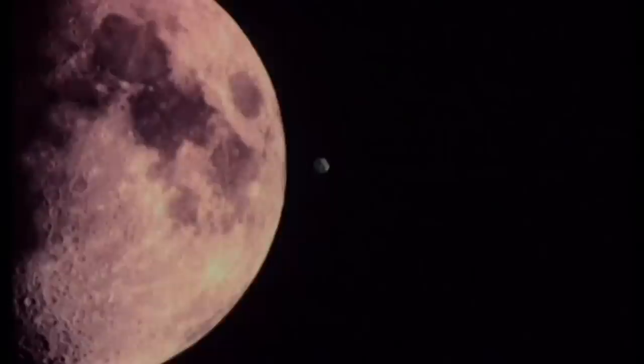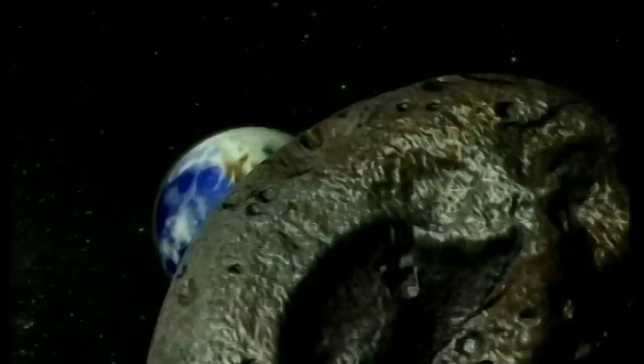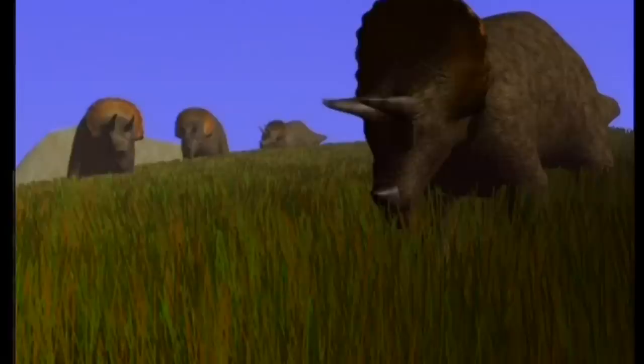C'était d'il y a 65 millions d'années. Dix kilomètres de roche et de métal entrent en collision avec la Terre. Pour les dinosaures, c'est l'heure du jugement dernier. La Terre étant engloutie sous un univers cosmique, l'extinction est massive.